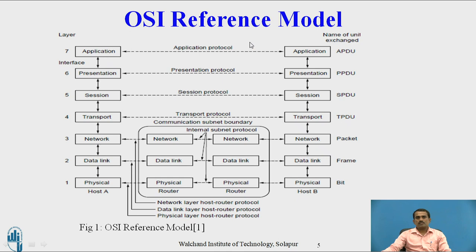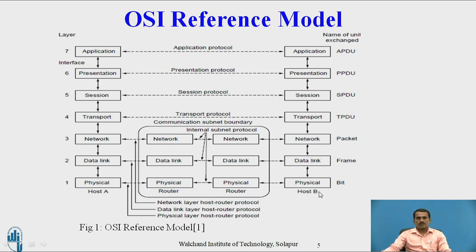These layers virtually communicate with each other. The dotted line indicates virtual communication and the dark line indicates actual communication. Data passes from the application layer to the presentation layer, then to the session layer. The network layer uses a host-router protocol, and there is an internal subnet protocol with a communication subnet boundary. Layers communicate peer-to-peer: application to application, presentation to presentation, session to session, and transport to transport, through the subnet from host A to host B.